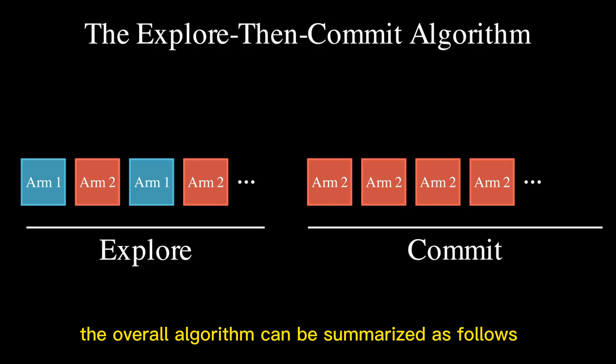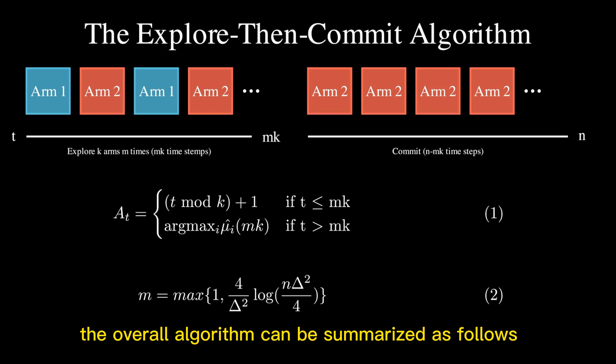The overall algorithm can be summarized as follows. In round t, we choose the action A_t where it equals (t mod k) + 1 if t is less than or equal to mk, meaning that we explored k arms m times in the exploration phase. If t is greater than mk, we choose the action A_t that is the argmax of the empirical mean of the rewards of arm i during exploration.